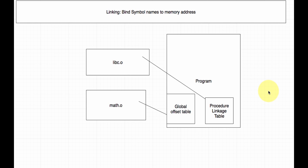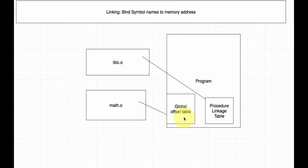This is called position-independent code, because no matter where your program is positioned in memory, the offset tables let the OS place it in virtual memory and still link to the correct variables and functions. However, since this translation has to happen and these tables have to be filled at load time, it can degrade performance. Static linking resolves everything at compile time — slower to compile but faster at runtime than dynamic linking.